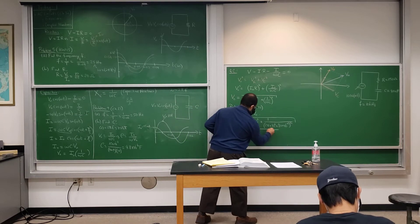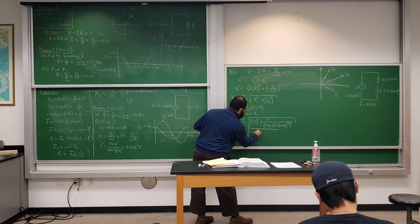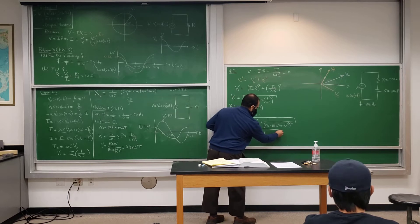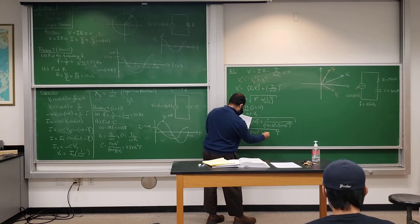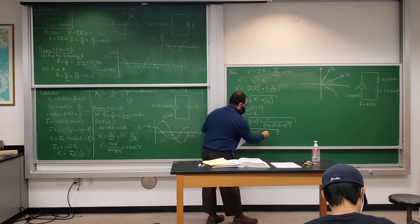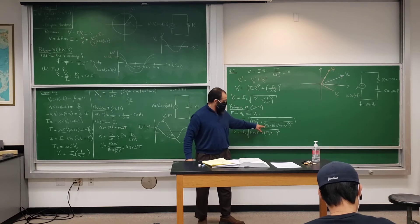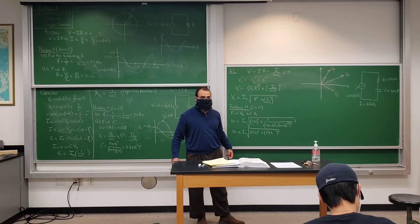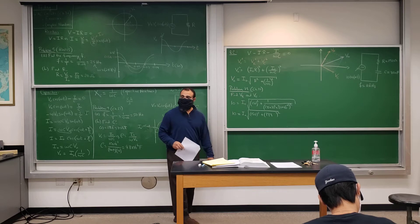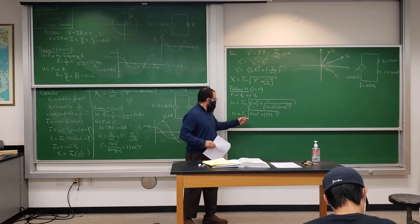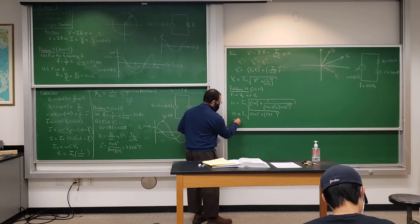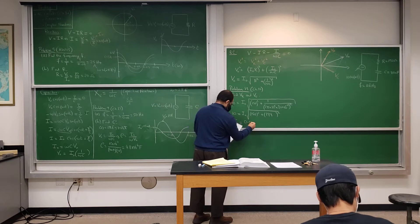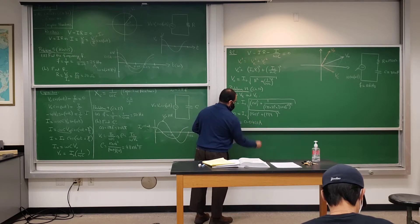So I0 equals 10 over the square root of 150 squared plus 199 squared. When you do 1 over omega C, you end up with 199. So you take the square root of 150 squared plus 199 squared, do 10 over that, and you get a maximum current I0 of 0.0401 amps.